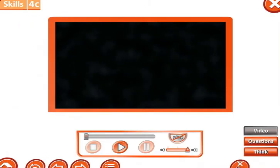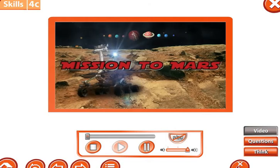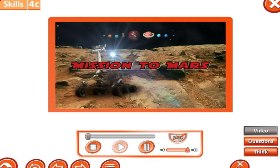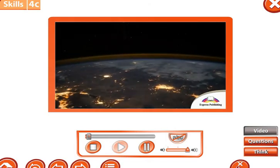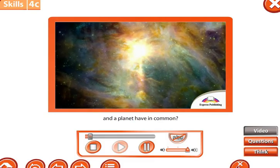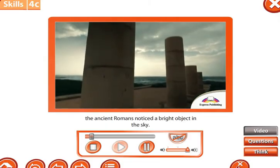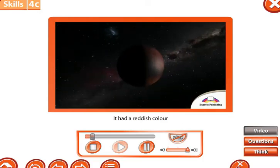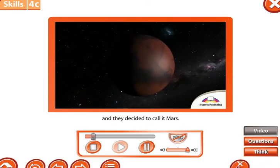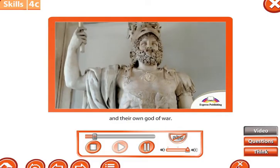Please watch this video about mission to Mars. What do an ancient god and a planet have in common? Thousands of years ago, the ancient Romans noticed a bright object in the sky. It had a reddish color and they decided to call it Mars.